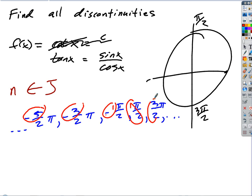How can you describe all those numbers? Say it again. n pi over two. Okay, now we're getting closer.